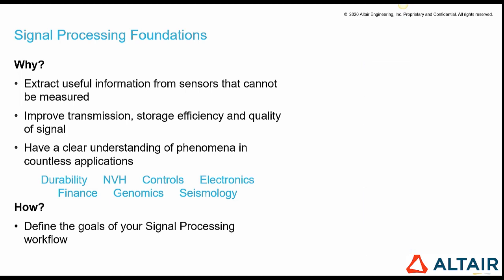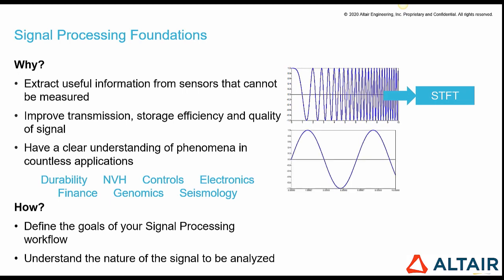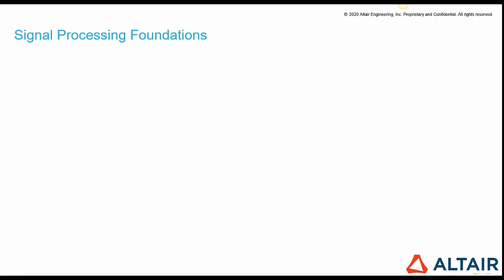It's mandatory to understand the nature of the signal to be analyzed, because it will tell us which procedure is the most appropriate. For example, if the signal is transient, like a chirp whose frequency increases with time, short-time Fourier transform is more suitable. If the signal is stationary, such as sine waves, fast Fourier transform is pertinent because it assumes periodicity. And if the signal is random, like a road profile or turbulent airflow, then the computation of power spectral density is the best approach.